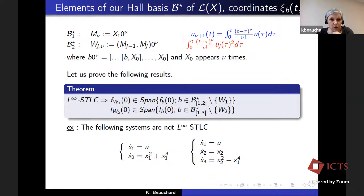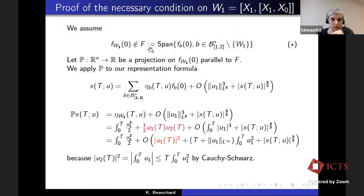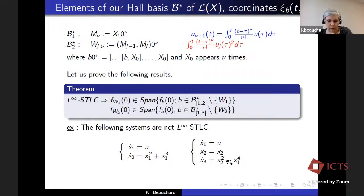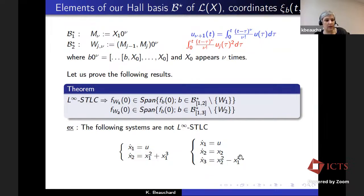Then we will look at the second bad quadratic bracket W2, which is [X1, 0, [X1, 0]]^2. We will prove that for anything-STLC, it must be spanned by brackets involving X1 at most three times. For a system X1 dot equal U, X2 dot equal X1, X3 dot equal X2 squared minus X1^4, the necessary condition proves that this term of order four is not sufficient — such a system is not L-infinity STLC as a consequence of the theorem we are going to prove.